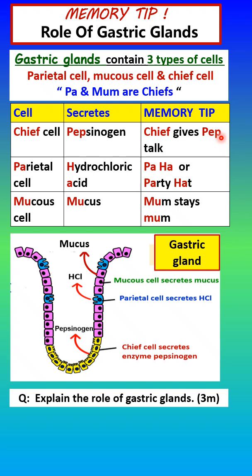Next, parietal cells secrete hydrochloric acid. This is very easy to remember. In Malay, 'paha' is the thigh region — Pa for parietal and Ha for hydrochloric acid, and it rhymes! Or remember the English version: party hat. Pa for parietal cell and Ha for hydrochloric acid. Lastly, we have the mucus cell that secretes mucus.